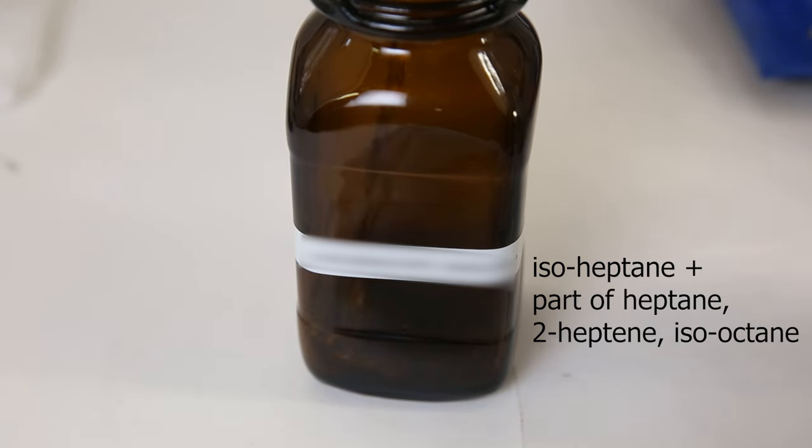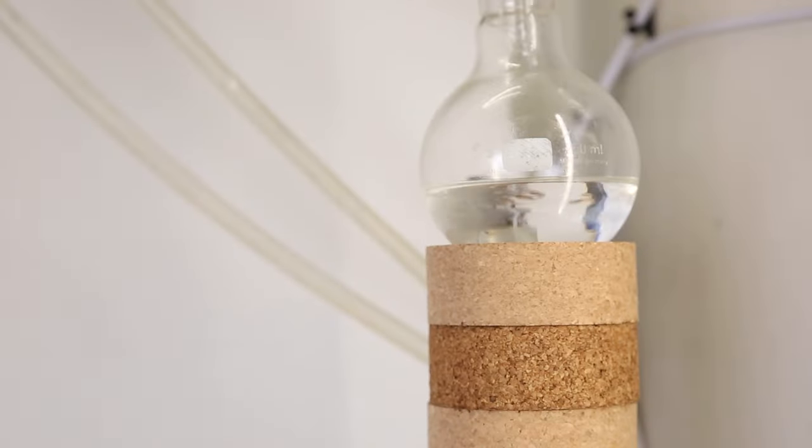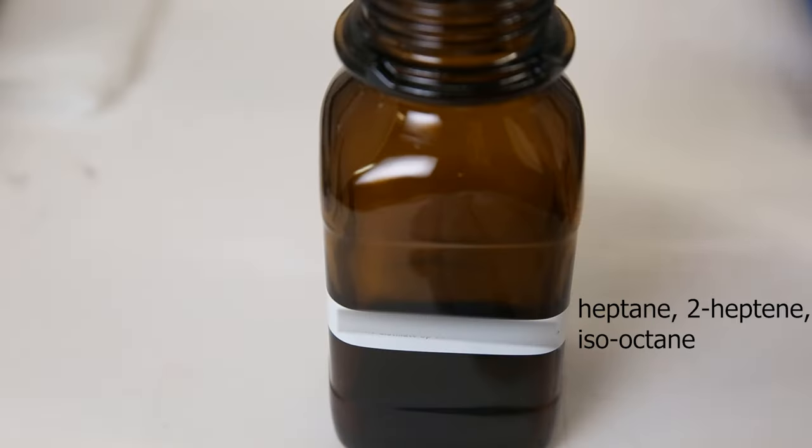I removed the flask to collect the fraction, but I left it a little too long at this temperature, so it is slightly overlapping with the next fraction. But I will redistill it afterward to get better separation. I left it going for longer so everything around 96°C could come over, and I put it into a new bottle as a new fraction.